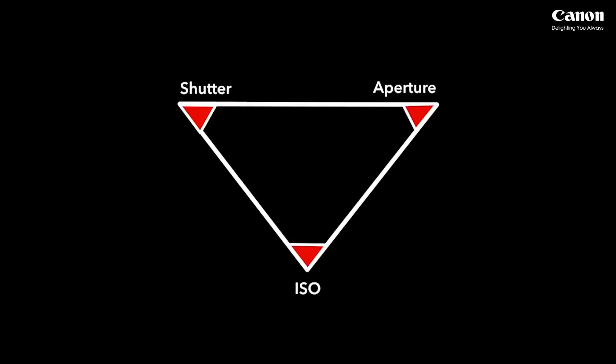In today's session we'll be discussing the exposure triangle. As you probably know, a camera is just a box and photography is all about light and how we control the amount of light hitting the sensor inside the camera. The exposure triangle involves three elements: shutter speed, aperture, and ISO. We'll be going over them one by one, starting with shutter speed.